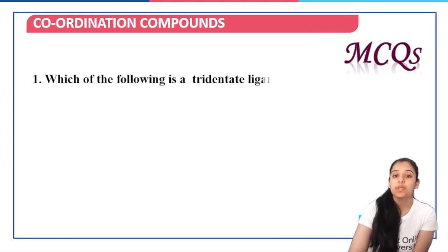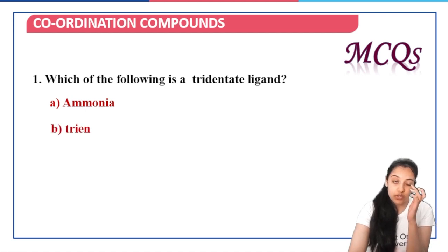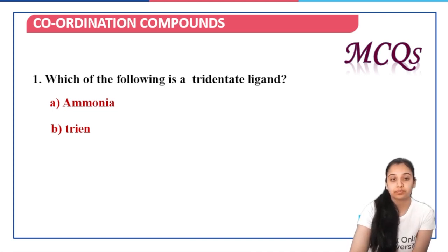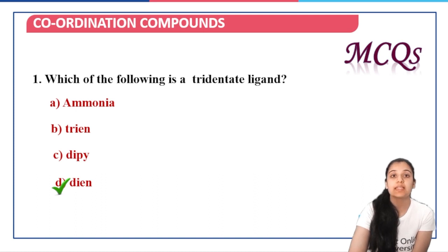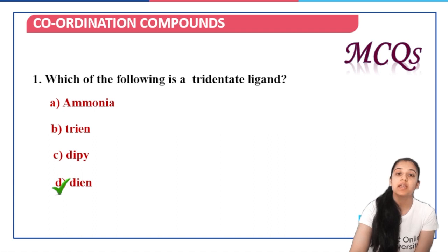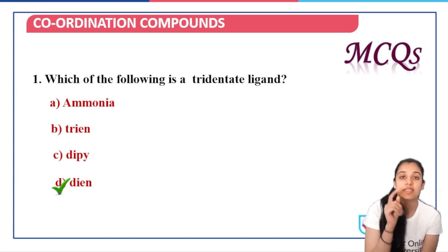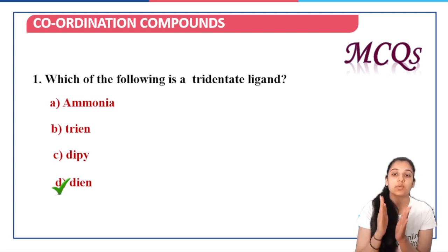MCQ: which of the following is a tridentate ligand? Ammonia is monodentate. Triethylene tetramine (tri-N) is tetradentate. Dipyridyl (di-P) is bidentate. Diethylene triamine (di-N) — triamine means three nitrogen atoms — is a tridentate ligand. The correct option is di-N. You should know the names, short forms, and structures of these ligands in order to answer such questions.